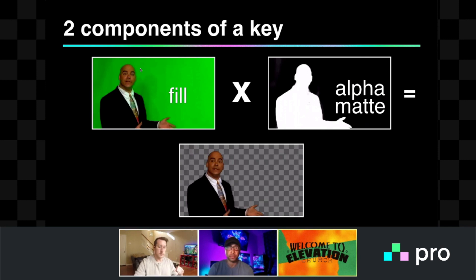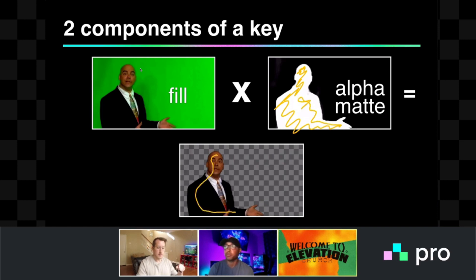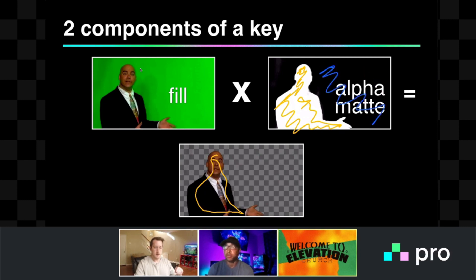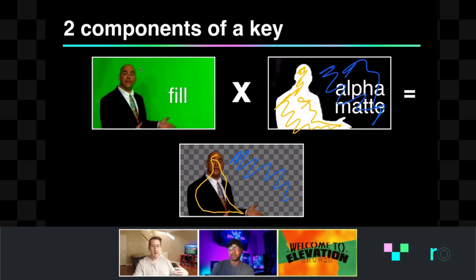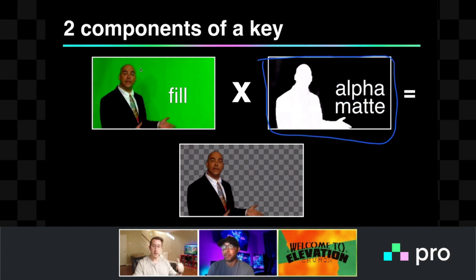Everywhere in your alpha matte that is white, that's going to become fully opaque — totally visible, you can't see through it at all. And then everywhere in your alpha matte that is black, the switcher is going to make fully transparent, so you can see through it completely. And then anything that's gray or halfway in between, it's going to make half opaque, or half transparent — however you want to think about it. That's how the switcher is going to composite these elements into each other. So every key is going to have a fill and an alpha matte. How do we get this alpha matte? There are a few different methods.